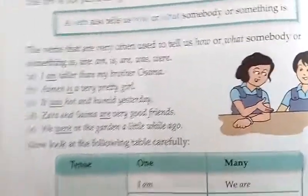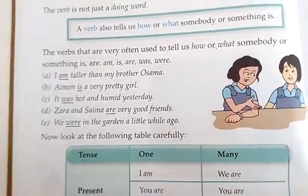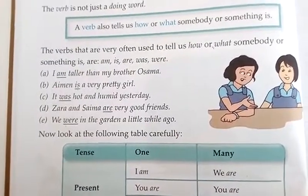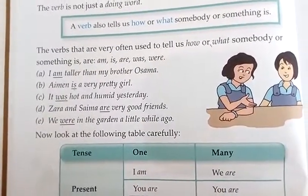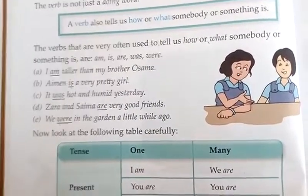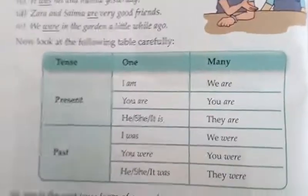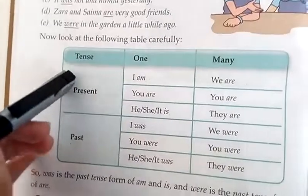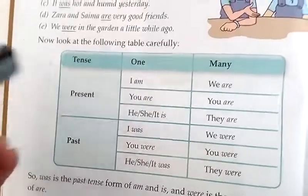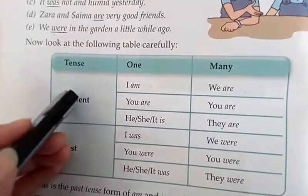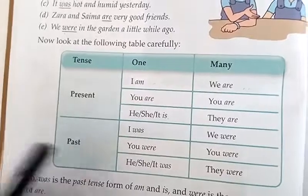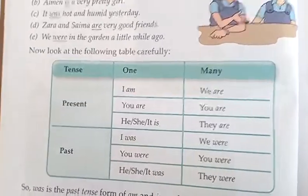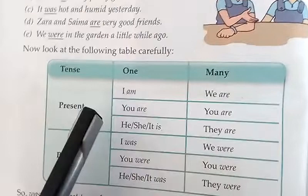میں نے was اور were والا concept آپ کو unit number 3 میں — جو آپ کی انگلیش کی book ہے — بتایا تھا: کہاں was لگے گا، کہاں were لگے گا۔ اب ہم tenses دیکھتے ہیں: present tense وہ ہوتا ہے جو ابھی ہم کر رہے ہیں — جیسے میں ابھی آپ لوگوں کو lecture دے رہی ہوں — اور past وہ جو گزر گیا ہے۔